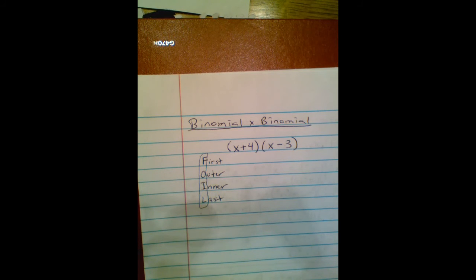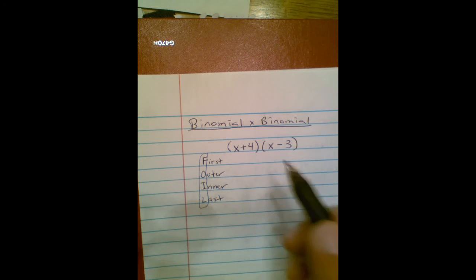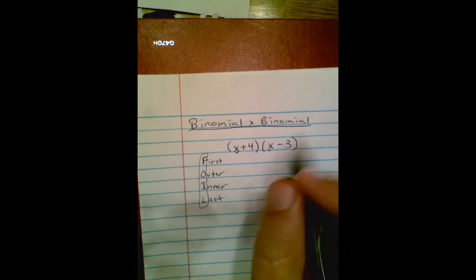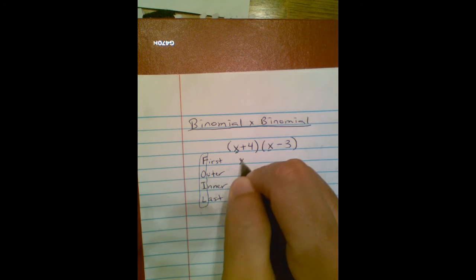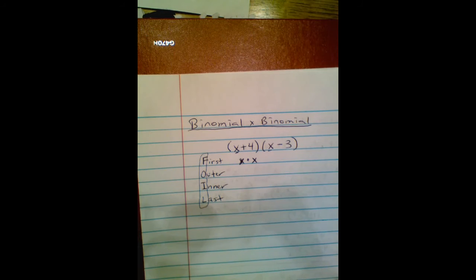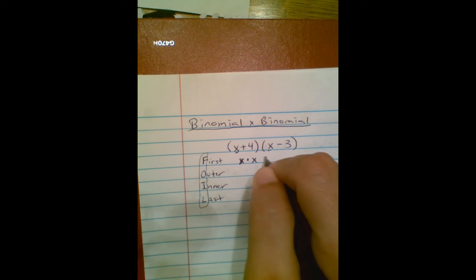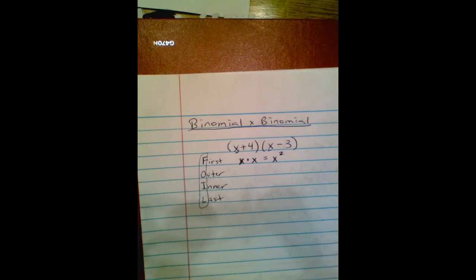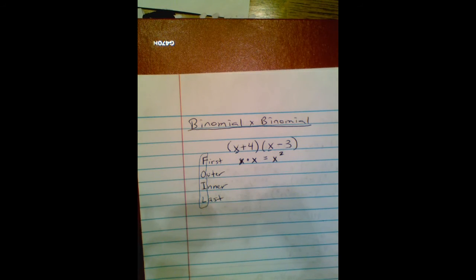First, Outer, Inner, and Last. So first means we're going to take the first term in each parentheses. The first term is x and x. So I got x times x, and x times x is the definition of x squared.